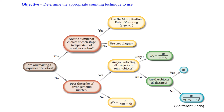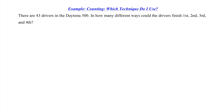We are told there are 43 drivers in the Daytona 500. In how many different ways could the drivers finish first, second, third, and fourth? We have more than one option to approach this — we can think in terms of permutations and combinations, or in terms of a sequence of choices. If thinking in terms of permutations or combinations, the first question is: does order matter? Since we're talking about drivers finishing a race, of course order matters — first, second, third, and fourth place.